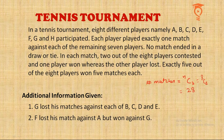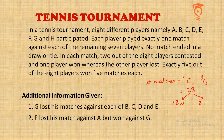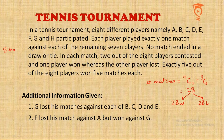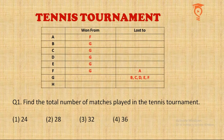28 matches imply 28 wins and 28 losses, since there is no provision for a draw — it's either a win or a loss. Now there are five teams which win five matches each, giving 25 wins. The remaining three wins must come from elsewhere. We are already eligible to answer the first question: find the total number of matches played in the tennis tournament — that is 28. No second thoughts. Clear answer, second option.